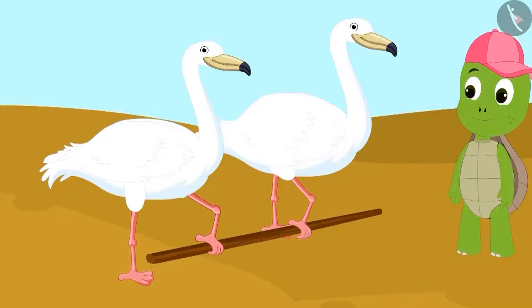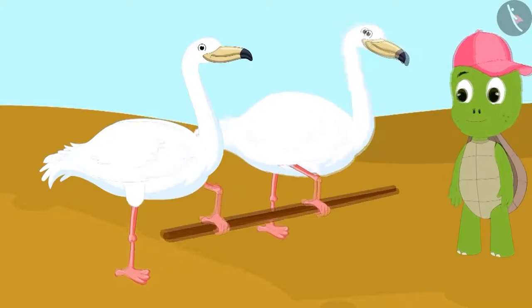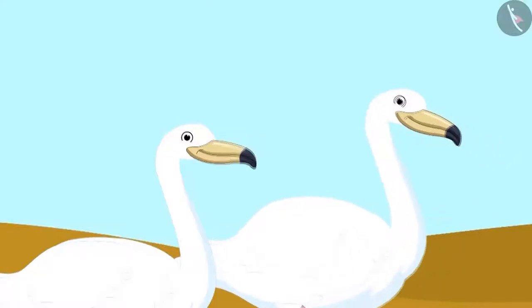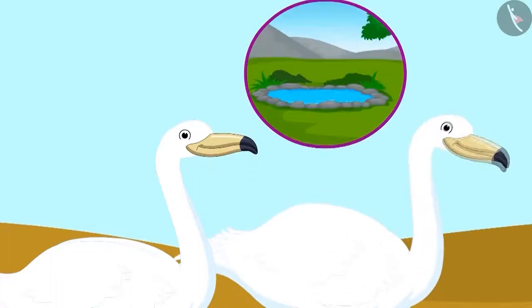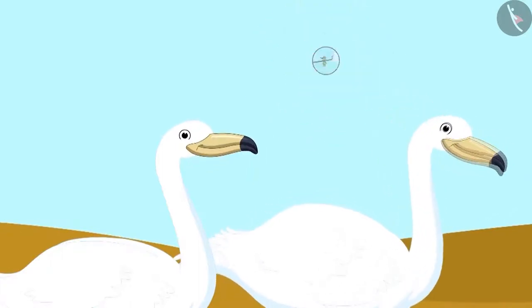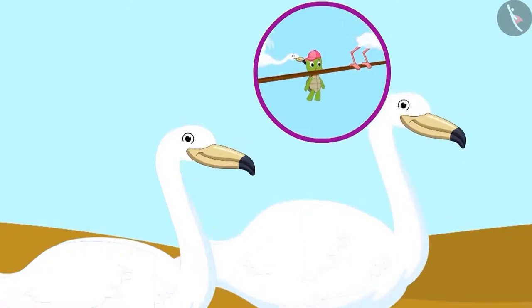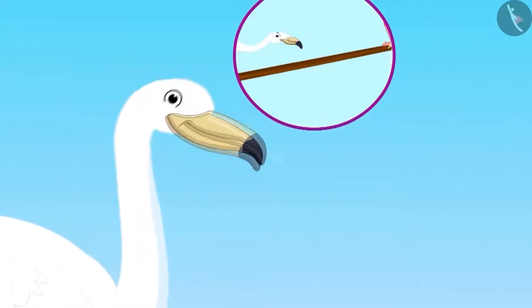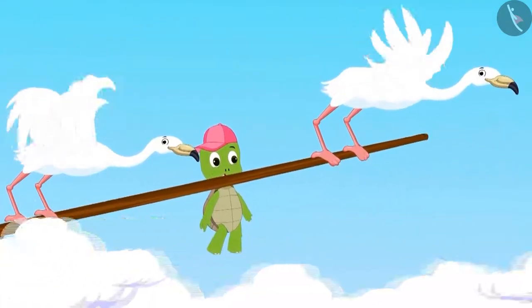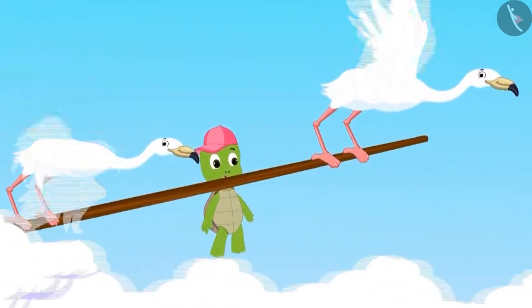The birds were determined to help him. They caught a wooden stick between them and told Tufan that they would drop him to the other pond. The only condition they had was that Tufan would not say anything all through the way, or else he would fall down.